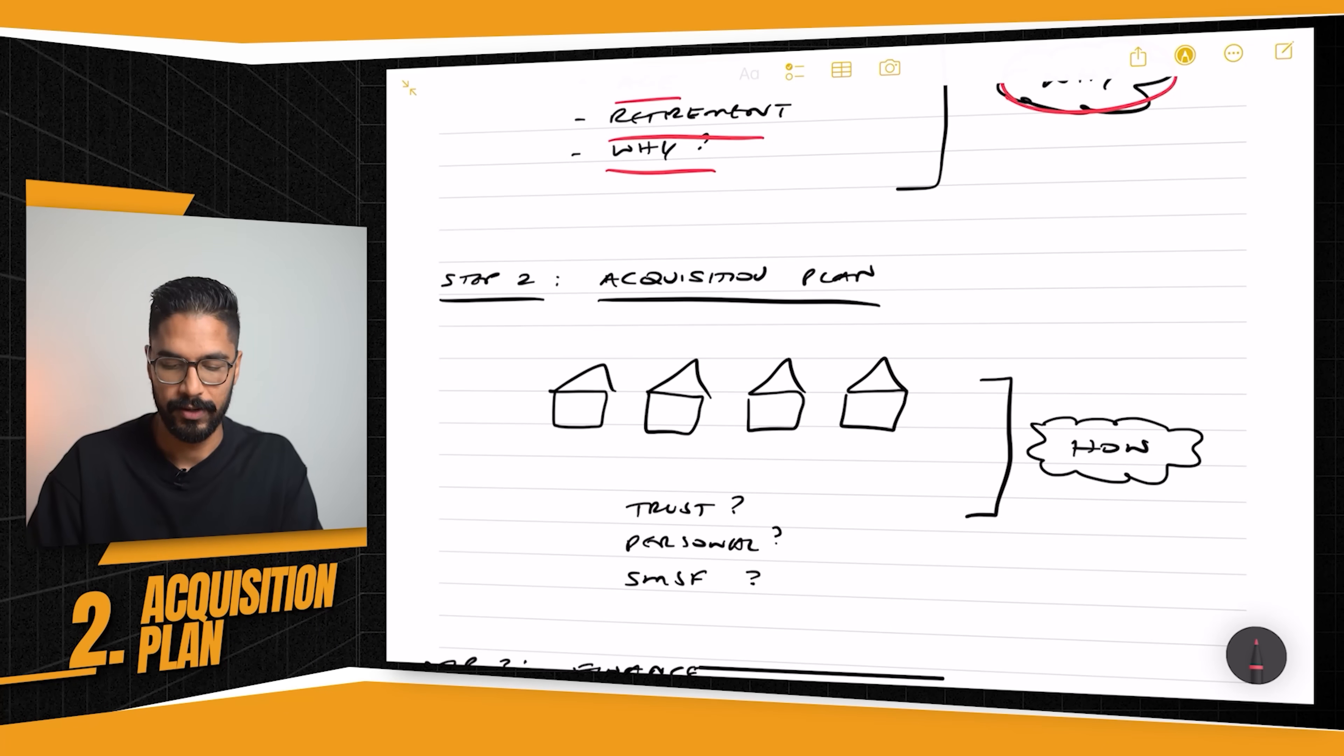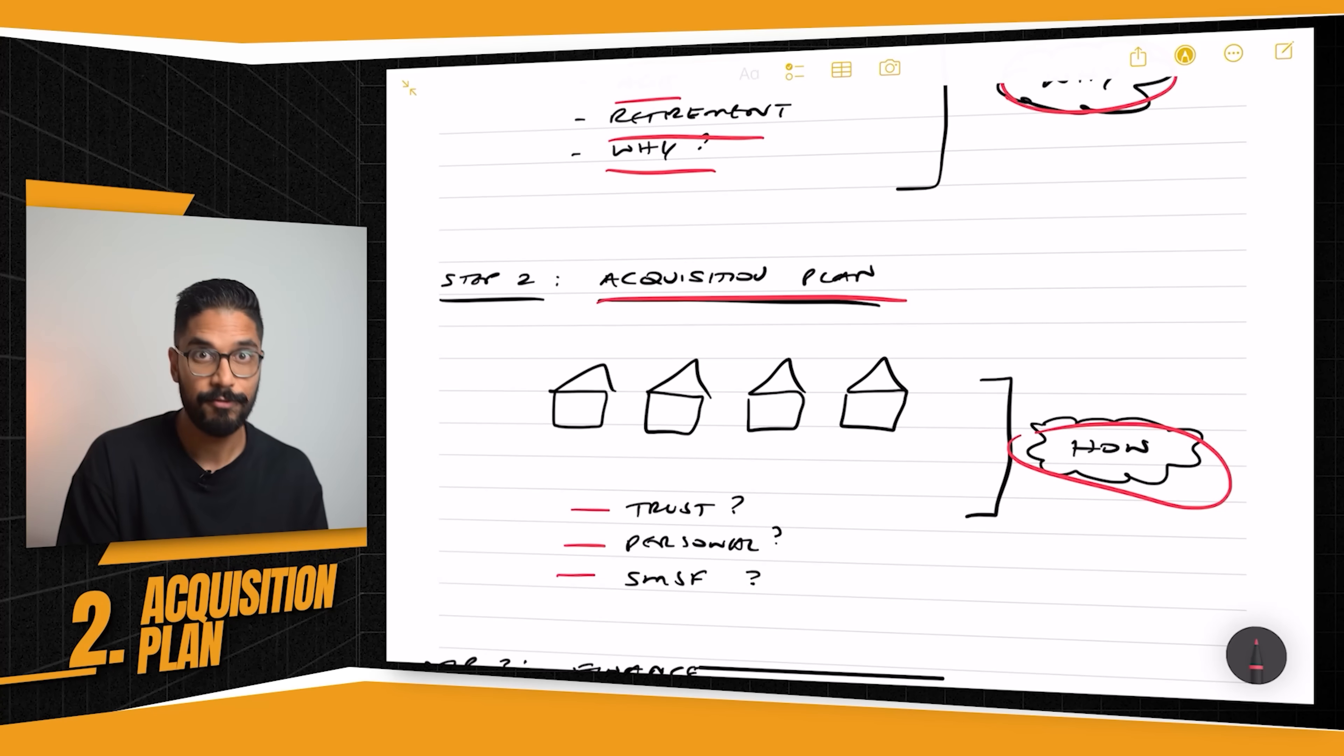Now, step two is your acquisition plan. You need to figure out what your how is. So you figured out why you want to do this, but how are you going to execute on this? Now it might be three properties. It might be 30 properties, but you need to also figure out, is it going to be under a trust? Is it going to be under your personal name? Is it going to be under your SMSF? These are the sort of things that you need to figure out and structure properly from the beginning. Because if you don't have this structured properly, you can find yourself three to four years later when you've bought your property to go, shit, I wish I had planned this out properly before I purchased something.